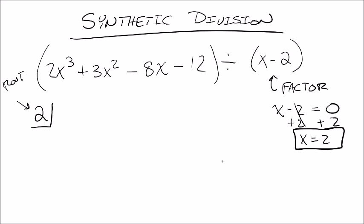Now the way that synthetic division works is you're going to take the coefficient of every number that you have there. So the 2x³, the coefficient is 2; 3x², the coefficient is 3; -8x, you get a -8; and then we have a -12.